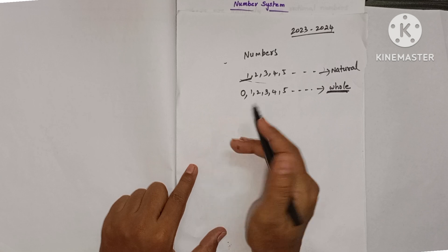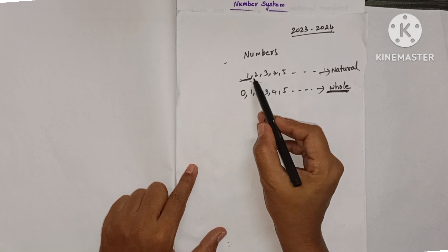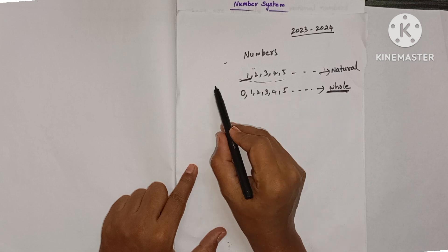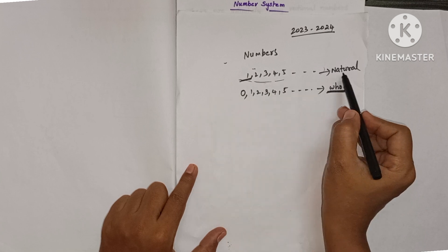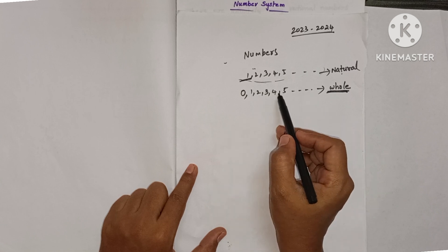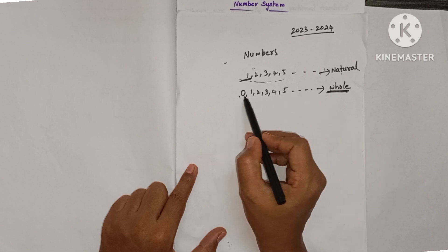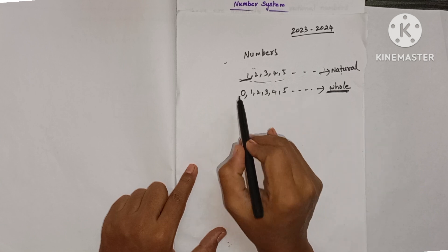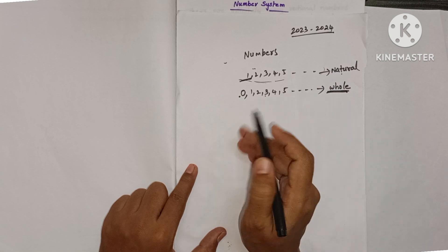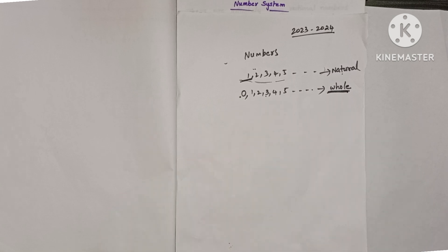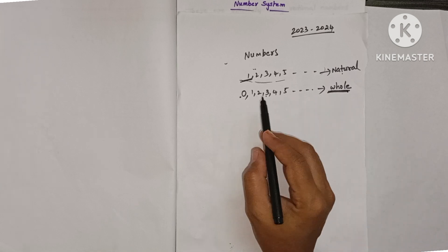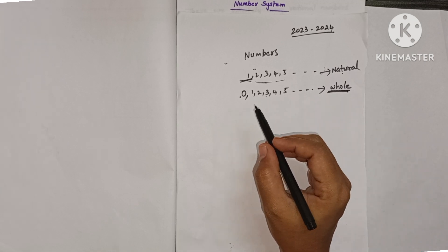So first you had some chocolates and counted them — those counting numbers are called natural numbers. After you ate the chocolates completely you had zero chocolates. When zero is added to the counting numbers, the numbers are called whole numbers.